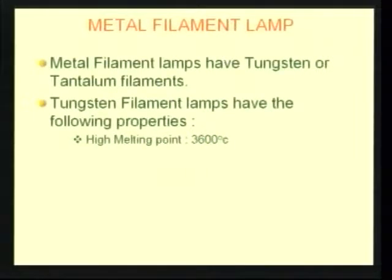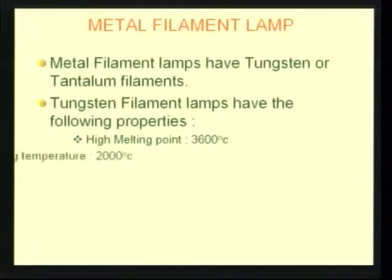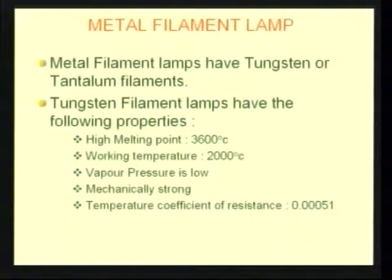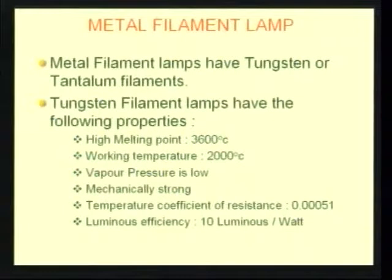Why is tungsten selected as the filament material? Tungsten has very important electrical and thermal properties. The melting point of tungsten is 3600 degrees centigrade, and the working temperature of the tungsten filament is 2000 degrees centigrade. Vapour pressure is low, and they are mechanically strong. The temperature coefficient of resistance of tungsten is 0.00051, which is very very less. The luminous efficiency of tungsten filament lamps is 10 lumens per watt.